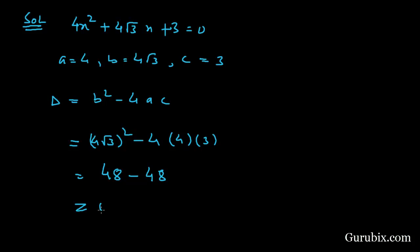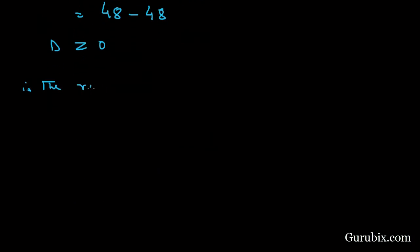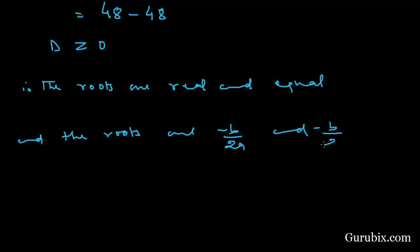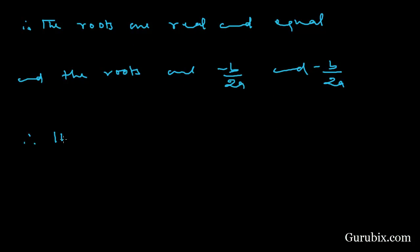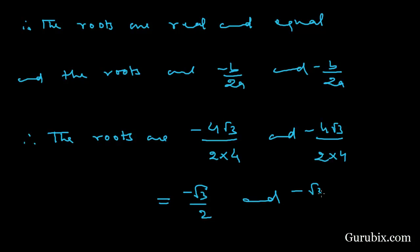Therefore, the roots are real and equal, and the roots are minus B over 2A and minus B over 2A. Therefore, the roots are minus 4 root 3 over 2 times 4 and minus 4 root 3 over 2 times 4. This equals minus root 3 over 2 and minus root 3 over 2.